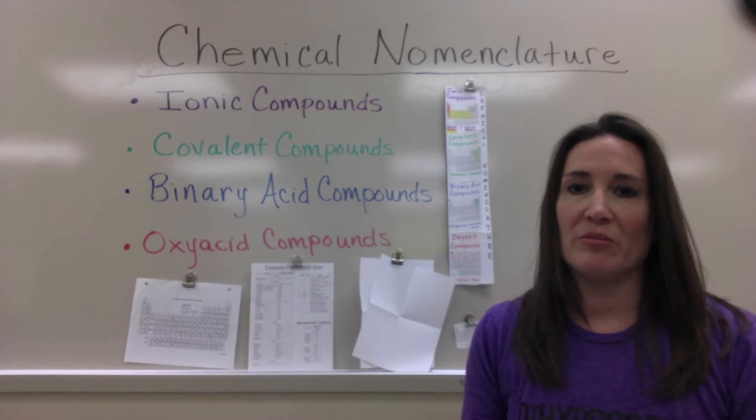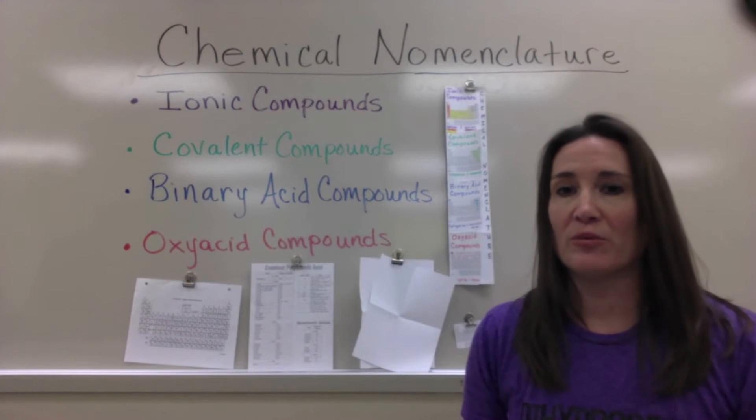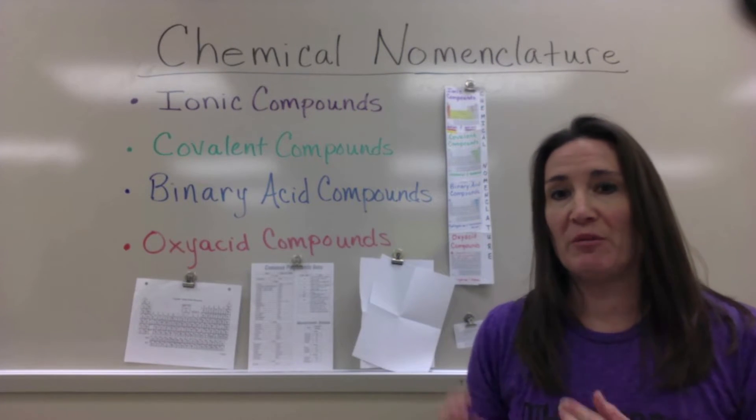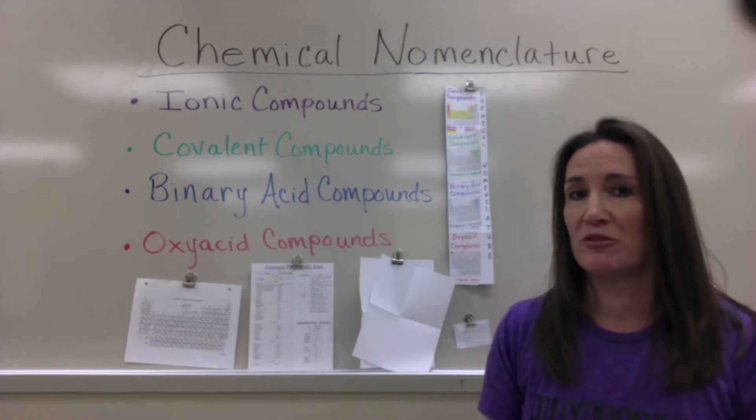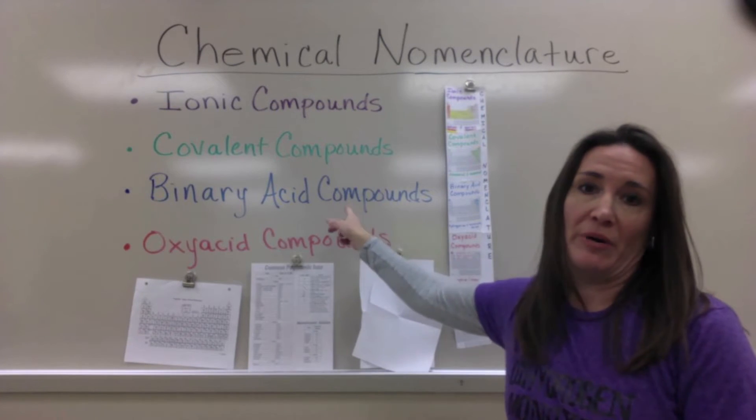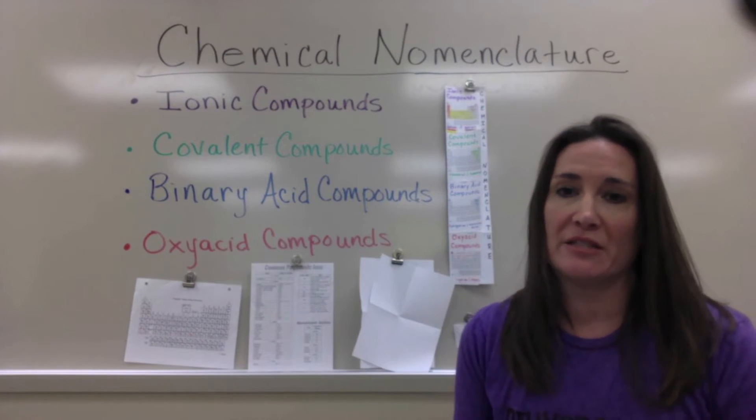So what I'm going to show you in this video is how to make a foldable to include all the rules and examples for naming four types of compounds in chemistry: ionic, covalent, binary acid, and oxyacid compounds.